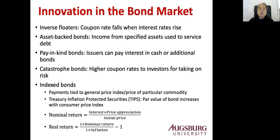Asset-backed bonds are bonds whose income comes from a specific asset used to service the debt. Pay-in-kind bonds allow the issuer to pay interest in cash or additional bonds. Catastrophe bonds are basically bonds with an insurance element — for example, FIFA for the 2006 World Cup was concerned about terrorism, so they issued bonds stating that if a terror attack happened in Europe, they would not pay part of the principal. Similarly, Disneyland in Tokyo issued catastrophe bonds stating that if an earthquake exceeded a certain magnitude, they would not pay back everything.